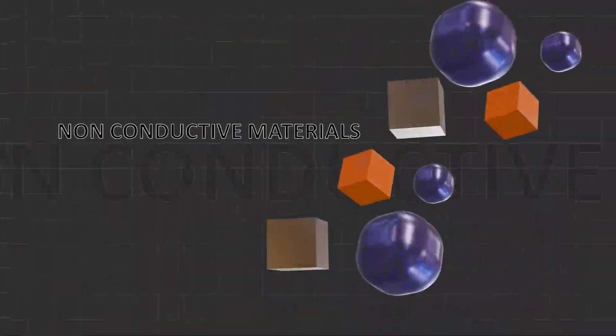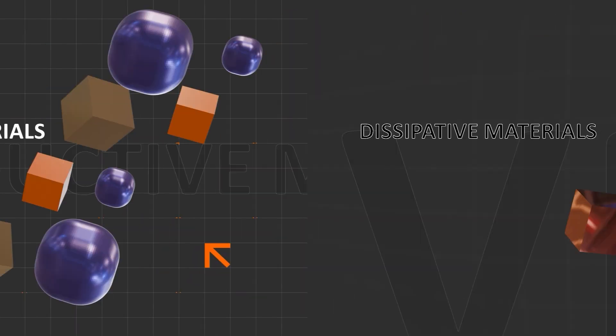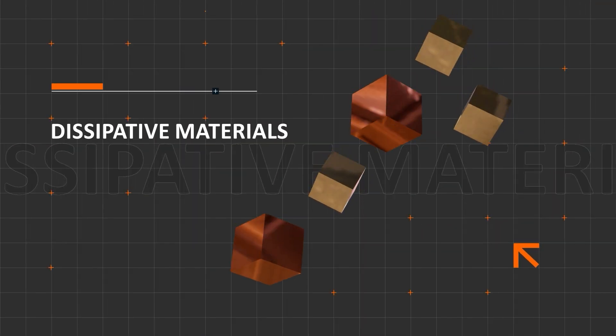There are also non-conductive materials, which are most common plastics, as well as dissipative materials such as steel or copper.